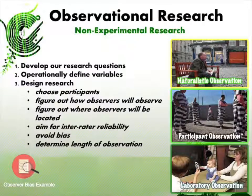Observational research data is normally collected as a frequency, because researchers are there taking tallies every time they see the behavior. They then count up all those tallies, giving them a number that represents the frequency of the behaviors — a simple count of how often a behavior occurred.